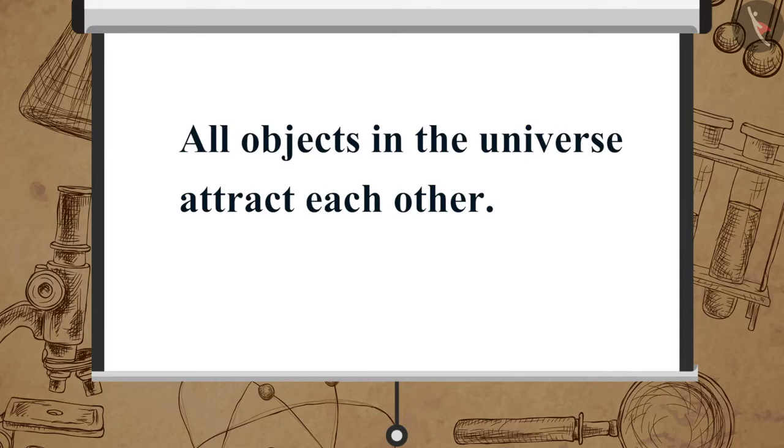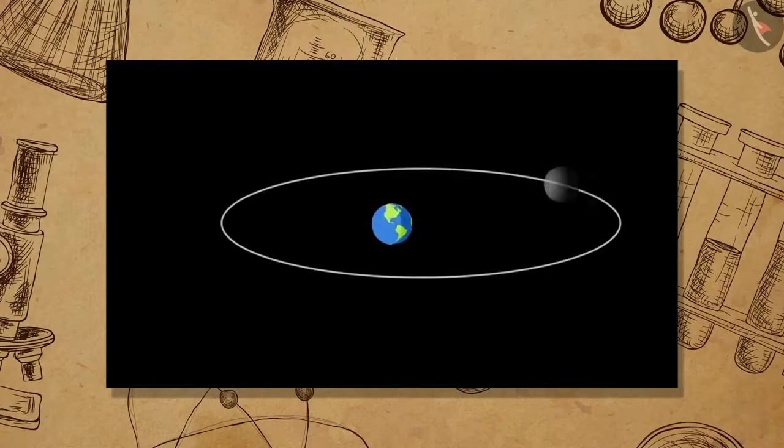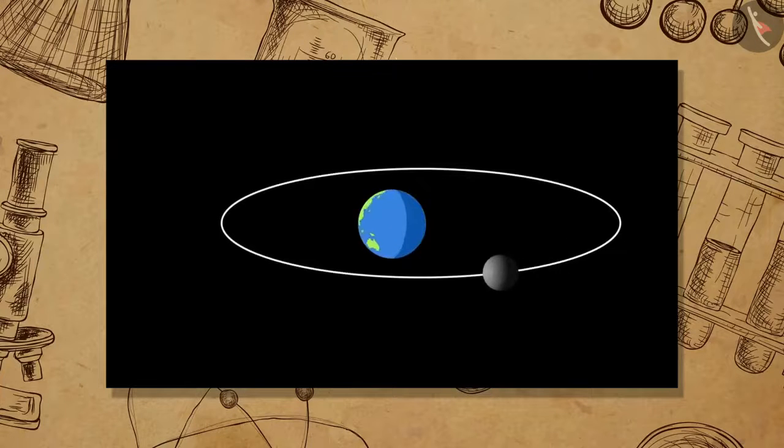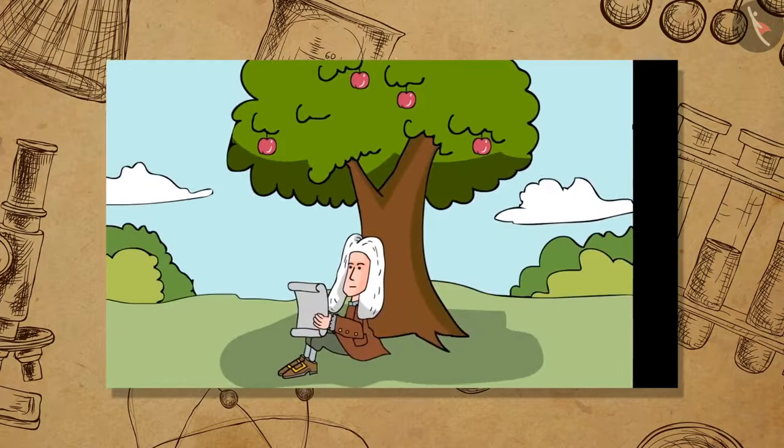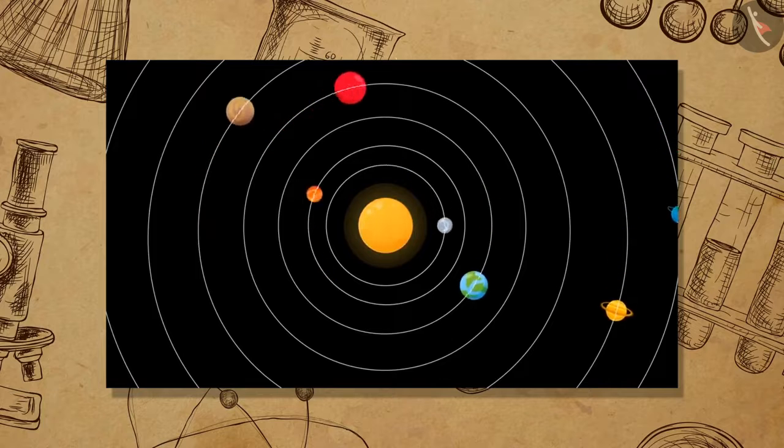Newton concluded that all objects in the universe attract each other. This force by which all the objects tend to attract each other is the gravitational force. Gravitational force is responsible for the motion of the moon around the earth, falling of objects on the surface of the earth, and for motions of the planets around the sun.